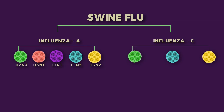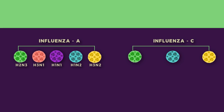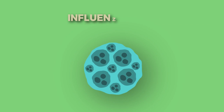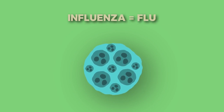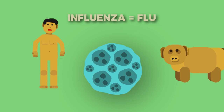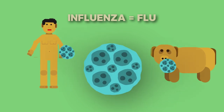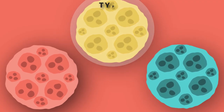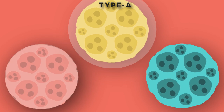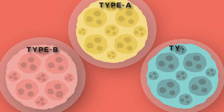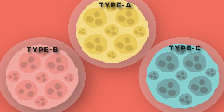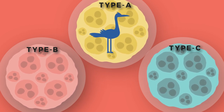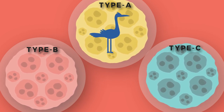Let's keep aside swine flu for now and focus on only influenza virus. The word influenza simply means flu and it's spread through some or other virus into humans or animals. These influenza viruses are categorized into three types: influenza type A, type B, and type C. Influenza type A spreads from wild aquatic birds and is the most dangerous among the three when it comes to humans.